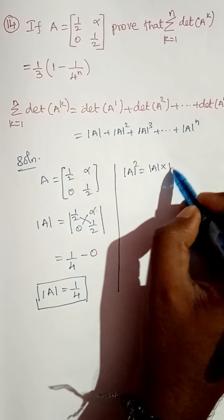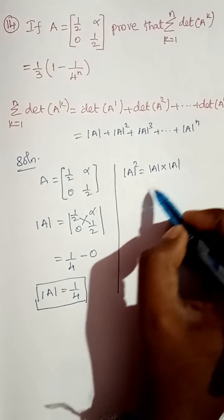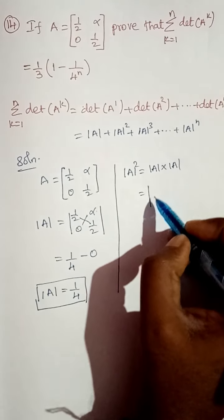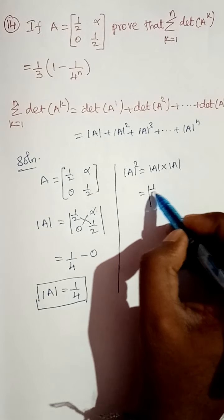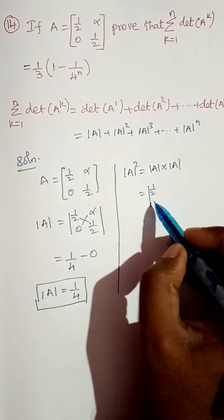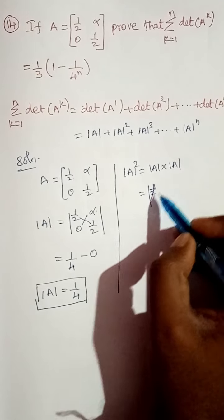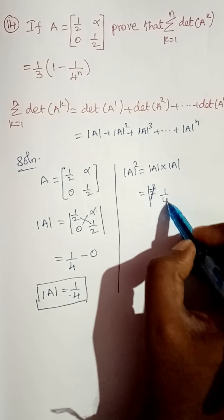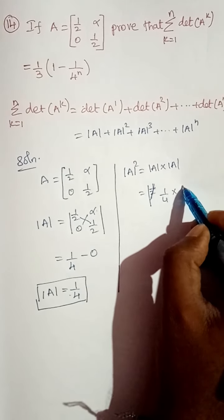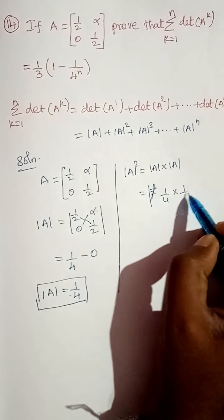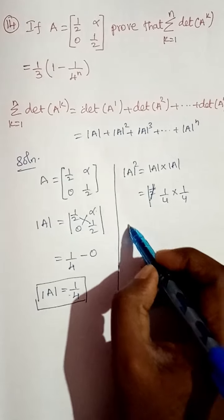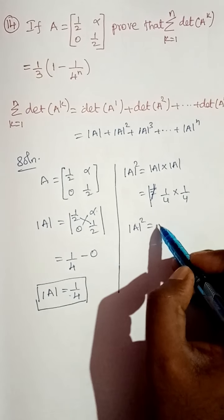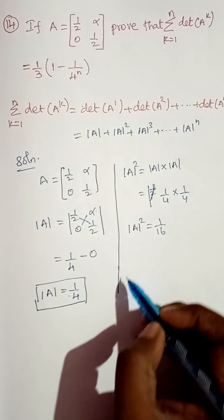Next, determinant of A squared is equal to determinant of A times determinant of A. So it is equal to 1/4 times 1/4, that is determinant of A squared is equal to 1/16.